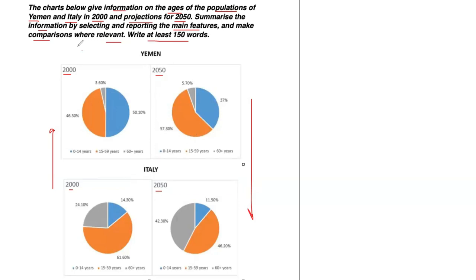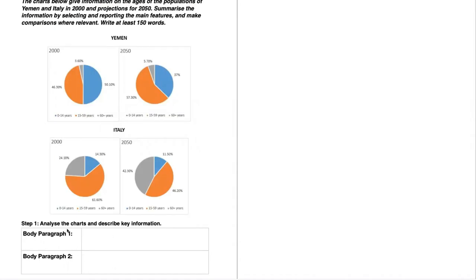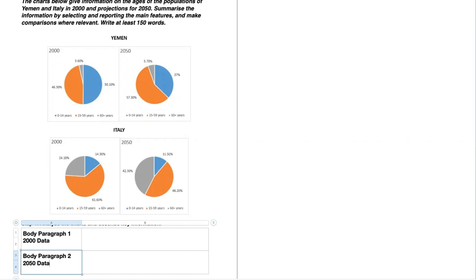If we were to group Yemen in one category and Italy in the other, you'd have to spend time comparing 2000 and 2050 and also comparing Yemen and Italy — that's far too much information for a 150-word minimum. In cases like this, it's usually best to group the years and use those as the significant features rather than the countries. Body paragraph one will be based on data from the year 2000, and body paragraph two on data from 2050.